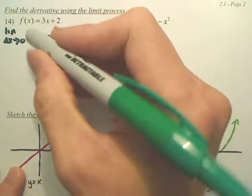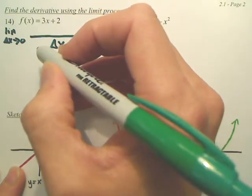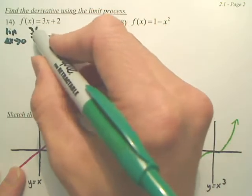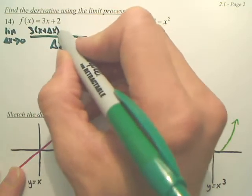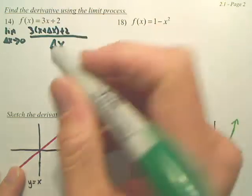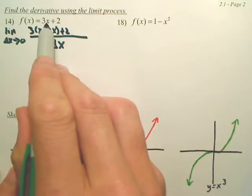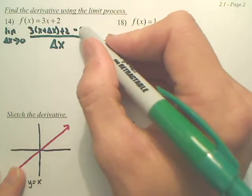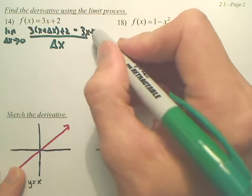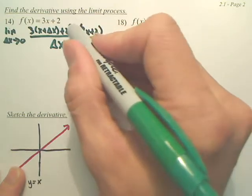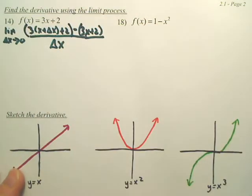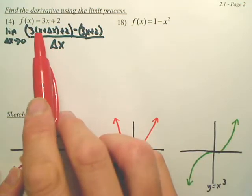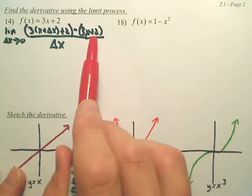The top is going to be f of x plus change of x. So that means 3 times x plus change of x plus 2. Do you see how I put x plus change of x in for x? Minus f of x, which is just 3x plus 2. This is change of y over change of x. This is f of x plus change of x, and this is f of x.